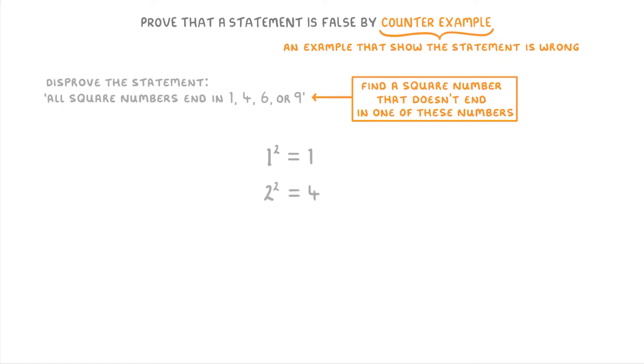So 2 squared is 4, 3 squared is 9, 4 squared is 16, 5 squared is 25, and we can stop there.